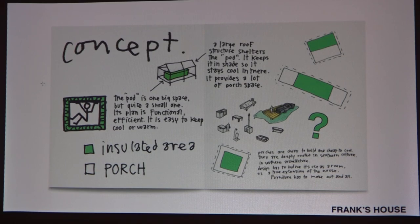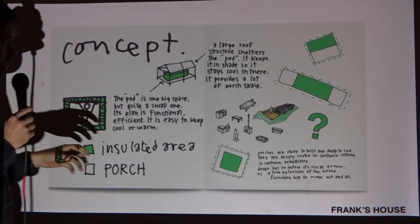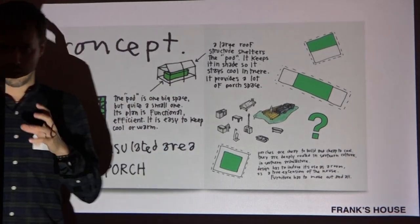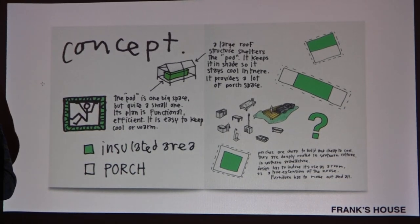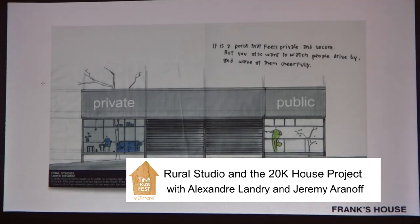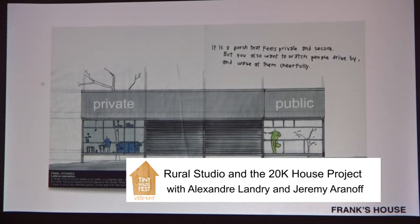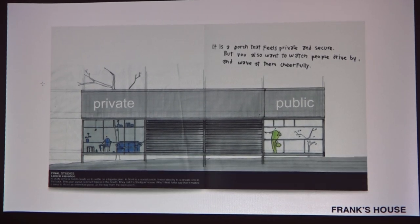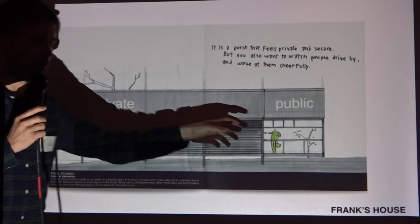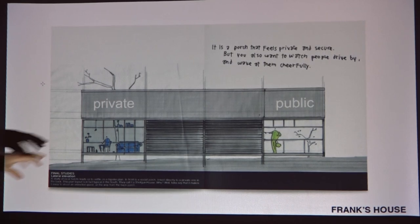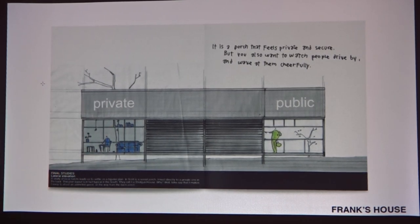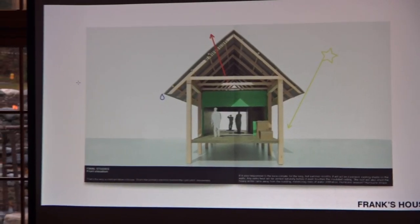One thing the previous prototype had that clients appreciated was a very large outdoor screened porch — which is great in the South because of the climate; it's basically another room. So we wanted to put emphasis on that. The reasoning: build a very small insulated pod and then build as large as possible an exterior space cheaply. The front porch is the social porch — to sit down and greet neighbors — and the back is the private porch used as an actual room.